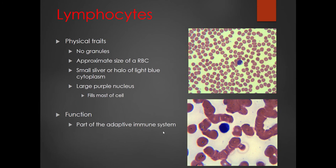Finally, we have lymphocytes. They are agranulocytic — no granules present. These are actually the smallest of the white blood cells, about the size of a red blood cell or maybe a little bigger. You'll only see a small sliver of light blue cytoplasm, because they have really large purple nuclei that take up most of the cell. Lymphocytes function as our adaptive immune system. If you get a bad infection, T cells and B cells trigger and respond to that very specific infection, making them quite powerful.